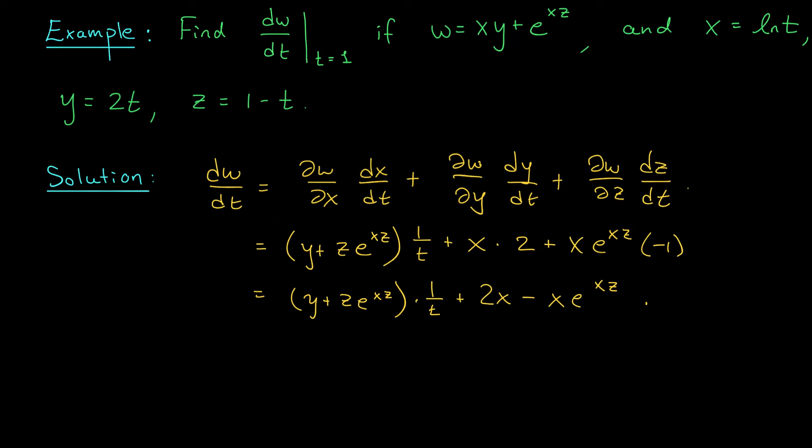So if we compute x, y, z when t is 1, we can substitute those numbers into here instead. When t equals 1, well, what do I get? I get x equals ln 1, which is 0, y is 2 times 1, which is 2, and z is 1 minus 1, which is 0.